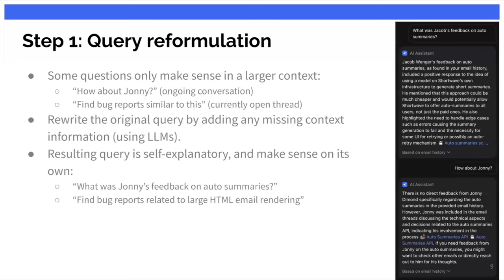There's also a lot of content diversity — plain text, markdown, HTML, multimedia — and a lot of metadata. Every email has a bunch of headers like to, CC, BCC, recipients, subject, timestamp. All this information is useful or should be considered when coming up with an answer. To deal with this complexity we devised a five-step retrieval pipeline. The first step is called query reformulation.